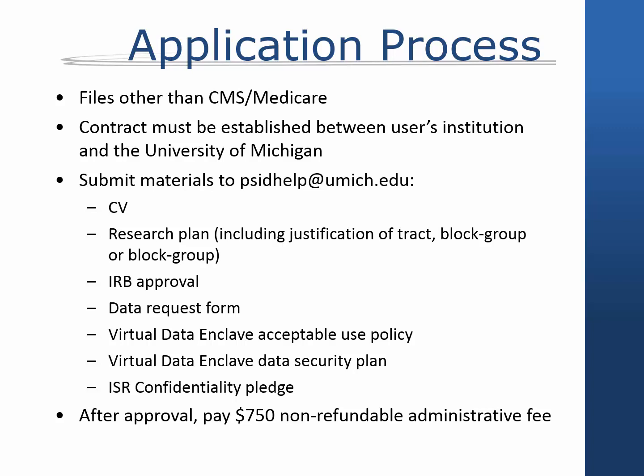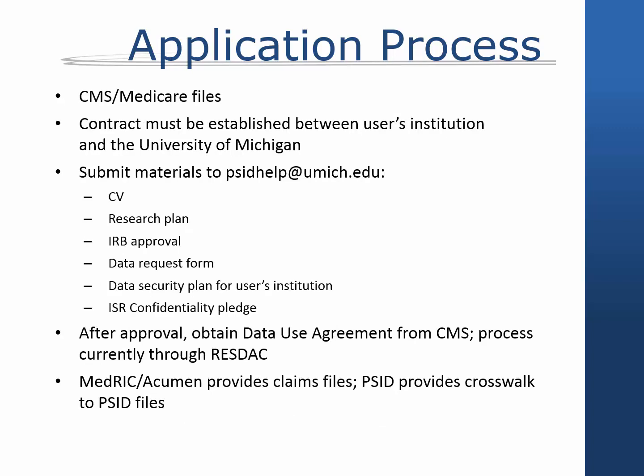Also required are the Institute for Social Research's confidentiality pledge forms for all researchers. Once the application packet has been approved, the administrative fee will be collected and the contract will be signed. For Medicare linkages, users first submit forms through PSID's Help Desk, including a data protection plan to receive data at their home institution. Once approved, users must then obtain a data use agreement from the Center for Medicare and Medicaid Services (CMS). Currently, the Research Data Assistance Center manages the data use agreements process for PSID, and linkable claims are provided by the MED RIC Division of Acumen LLC, with a crosswalk file provided by PSID.